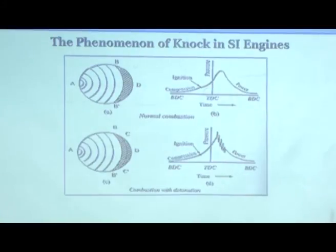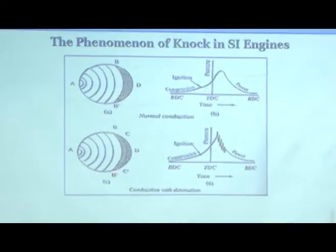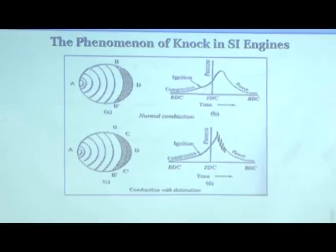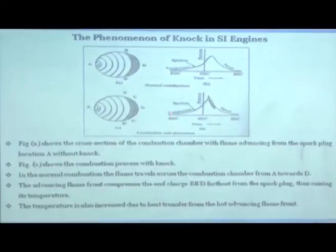However, if the unburnt charge has reached auto-ignition temperature and the delay period has elapsed, but during that delay period the flame front only advanced from BB' to CC', then the charge in the CC'-to-D region will have reached auto-ignition temperature with the delay period over. This charge will explode, and the two pressure waves — one moving from the flame front direction and one from the auto-ignition — collide, giving rise to pressure fluctuations. This is knocking in the spark ignition engine.